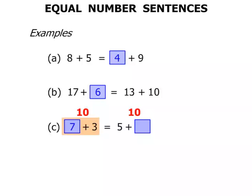So if we've got this side as 10, we want the other side to be 10 as well. So we think 5 plus 5 will make 10. Okay, so there's one example of a correct answer.